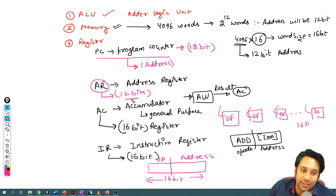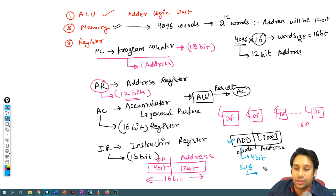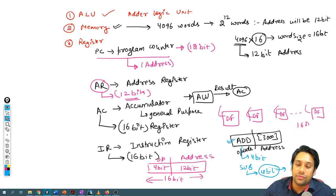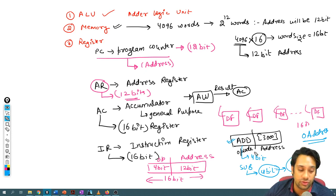The instruction register is divided into two parts: the address part is 12 bits and the operation code is 4 bits. With a 4-bit operation code, we can represent a maximum of 16 operations — meaning this machine can perform up to 16 operations. It is also possible to have zero-address instructions, which we will discuss later. Whatever operation we want to perform will be represented by 4 bits. IR stands for instruction register.